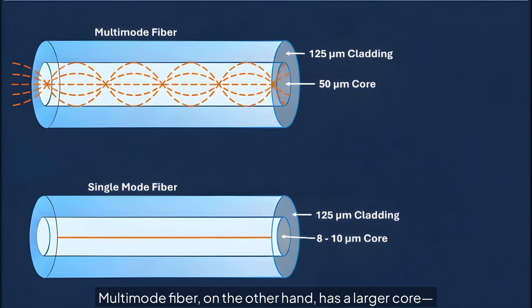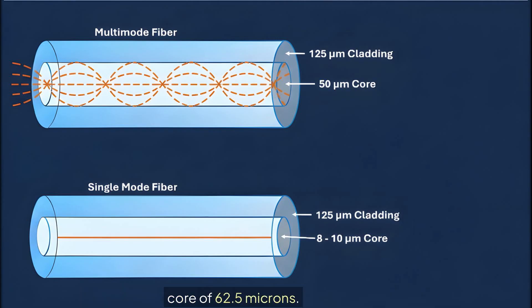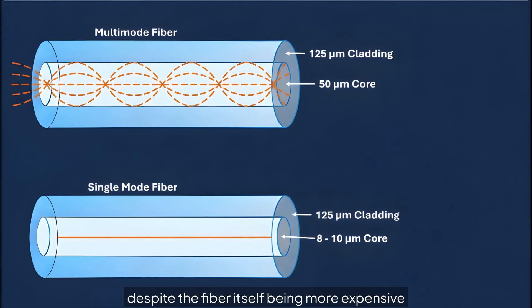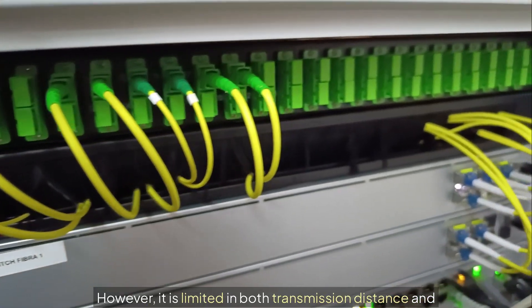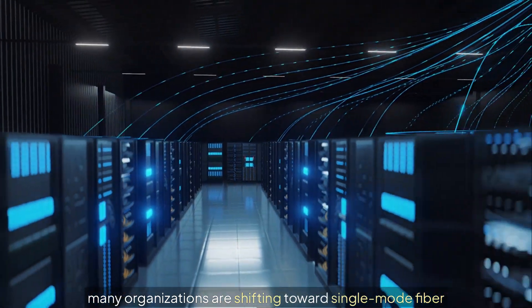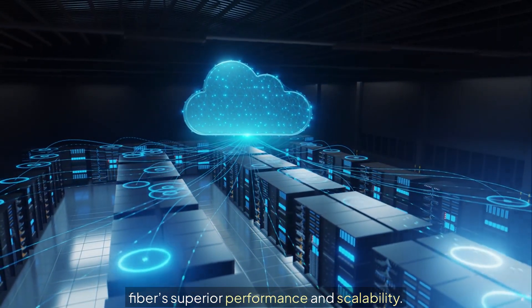Multi-mode fiber, on the other hand, has a larger core, commonly 50 microns, which makes it easier to couple light into the fiber and allows for the use of lower cost transmitters. An earlier version of multi-mode fiber featured an even larger core of 62.5 microns. While multi-mode fiber supports cost-effective electronics, it is well suited for short-reach applications such as those in data centers. However, it is limited in both transmission distance and, as data rates continue to increase, many organizations are shifting toward single-mode fiber, even for short-reach scenarios, due to its superior performance and scalability.